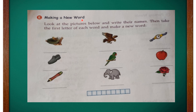Look at the pictures below and write their names, then take the first letter of each word and make a new word. So by looking at the picture you have to write down the name, and using the first letter of each picture you have to fill in the box. Okay, let's start!